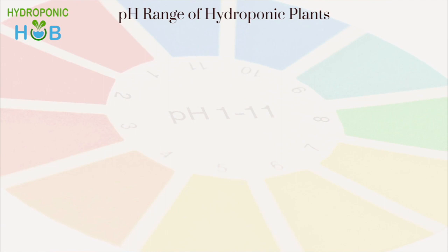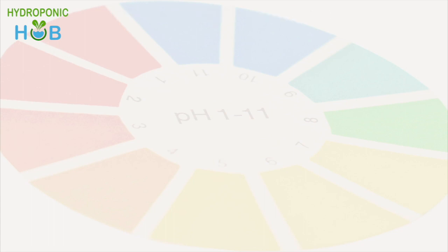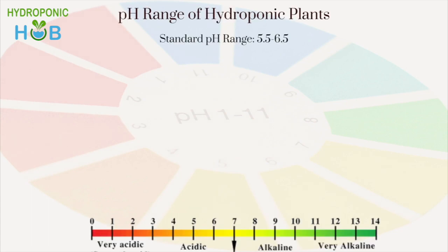Now let's understand the right pH level required for healthy plant growth. If the level is correct, it will make plants grow faster by increasing their metabolism rate. But if not maintained properly, it can have a harmful effect on the plants. The standard pH range for hydroponic plants is 5.5 to 6.5.